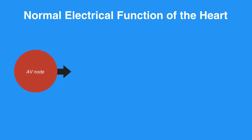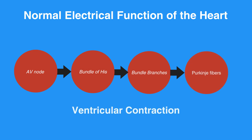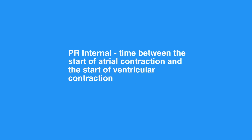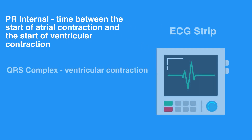This impulse then travels to the AV node, which in turn conducts the electrical impulse through the bundle of His, bundle branches, and the Purkinje fibers of the ventricles, causing ventricular contraction. The time between the start of the atrial contraction and the start of ventricular contraction registers as the PR interval on an ECG strip. The ventricular contraction registers as the QRS complex.